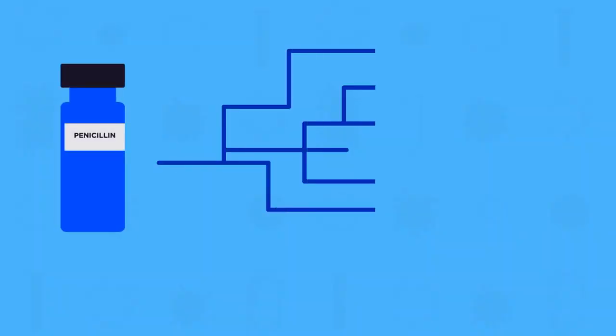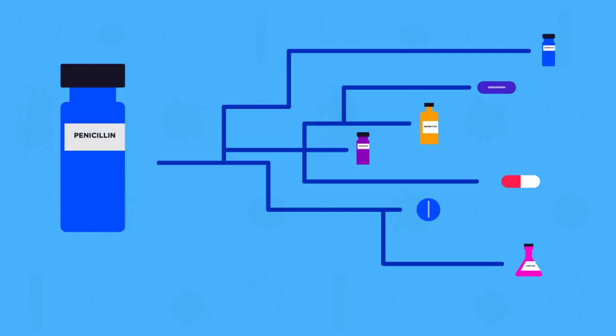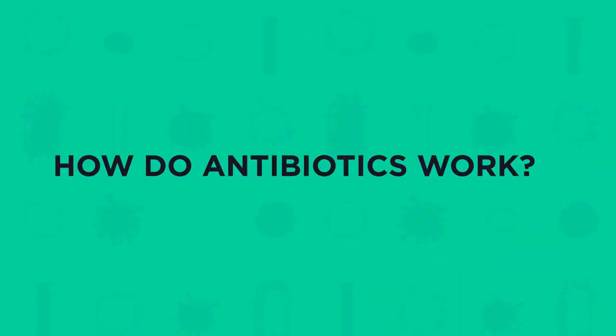Penicillin was just the start. Now we make over 100 different types of antibiotics against different types of bacteria. So how do antibiotics actually work?